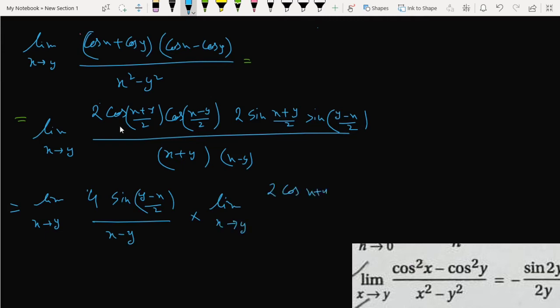We have 2 cos((x+y)/2) cos((x-y)/2). So we can write cos((x+y)/2) times cos((x-y)/2), and sine((x+y)/2) divided by (x+y).